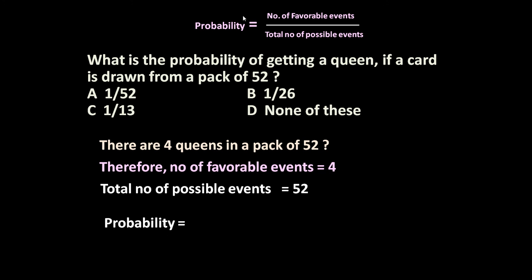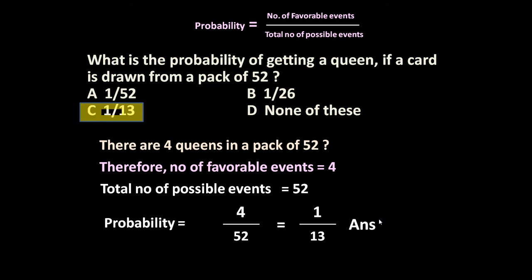So probability equals number of favorable events, which is four, divided by total number of possible events, which is 52. That gives us 4 upon 52, which equals 1 upon 13. So the answer is 1/13.